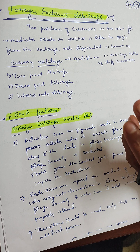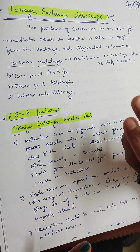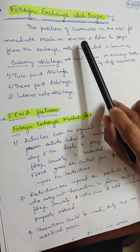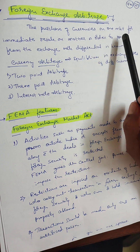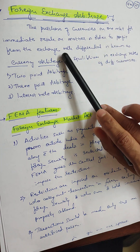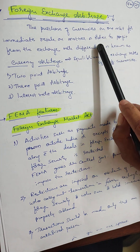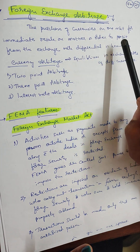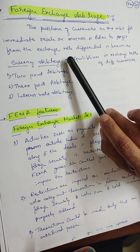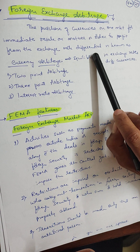Two-point arbitrage, three-point arbitrage, and interest rate arbitrage. The purchase of currencies on one market for immediate resale on another in order to profit from the exchange rate differential.